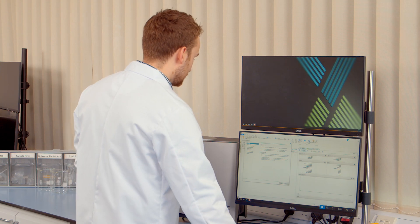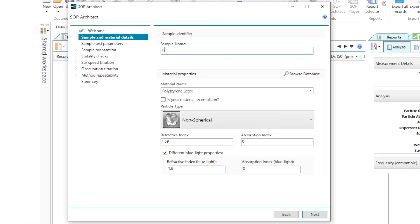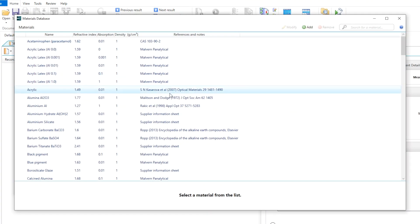I'll now carry out an example by measuring this titanium dioxide powder. So the first thing that we'll have to do is input some information about our material. We'll be looking at a titanium dioxide sample today and we can find the optical properties for this material within the Malvern Panalytical database.